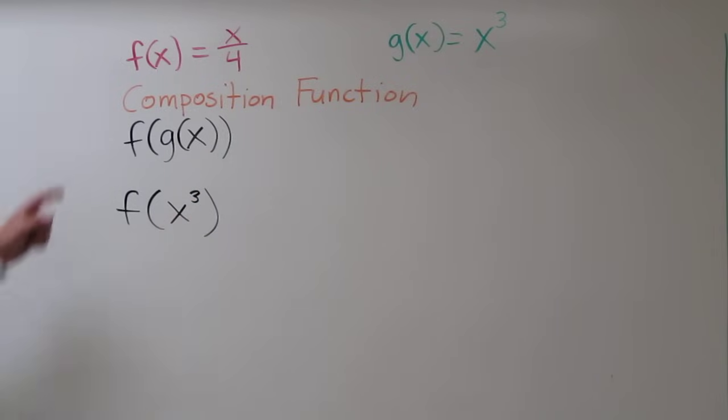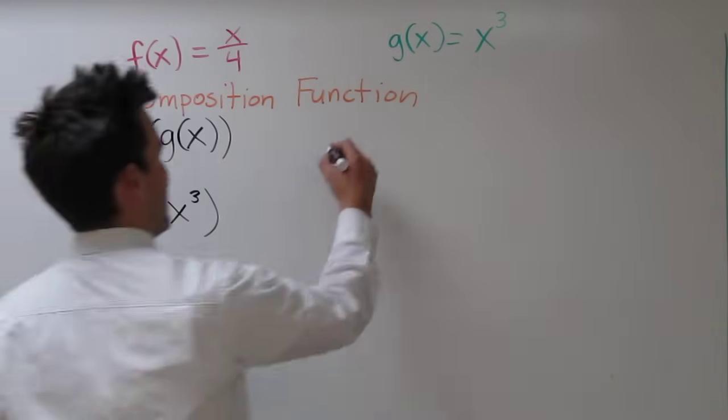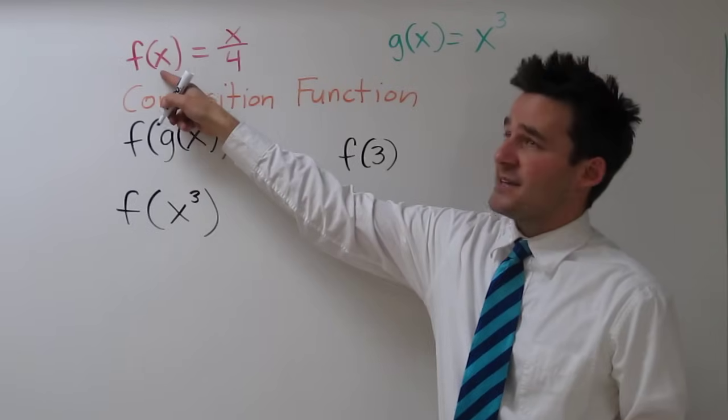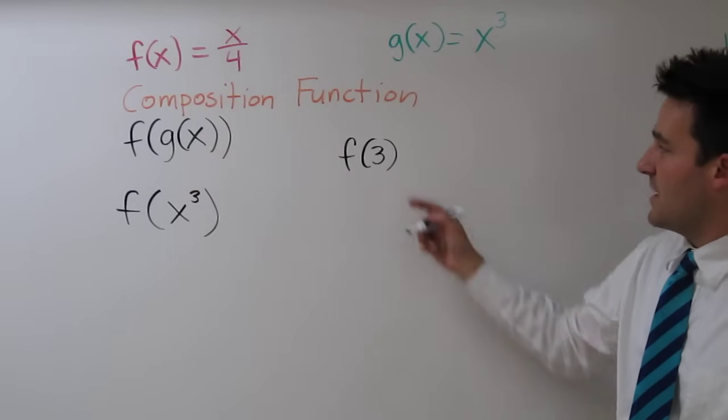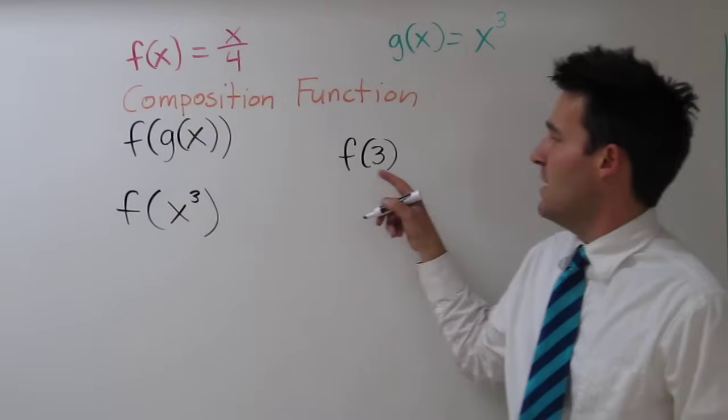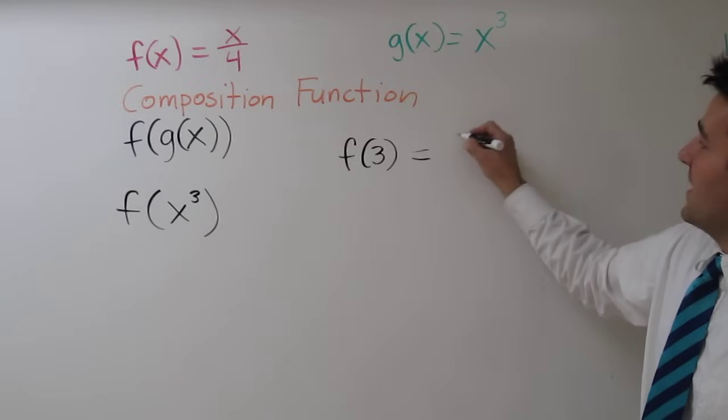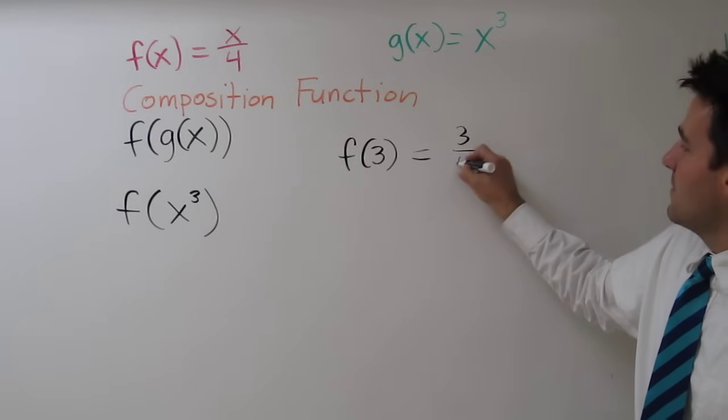Now, you may be familiar with figuring out what f of 3 is. For example, if you had defined f of 3, this would mean you simply replace the x with any x on this side. You replace the x with a 3 here, replace the x with a 3 there. So f of 3 is 3 fourths.